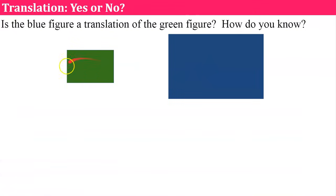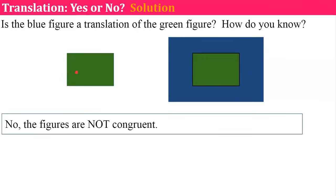Is the green figure this original figure? Can the blue figure be a translation of the green figure? And how do you know? The answer is no because the figures are not congruent. As soon as you see that the figures are not congruent, we know that there's no way it could be a translation.